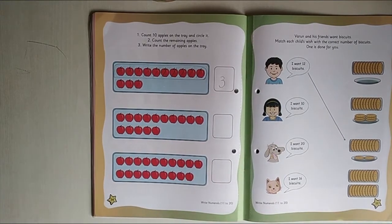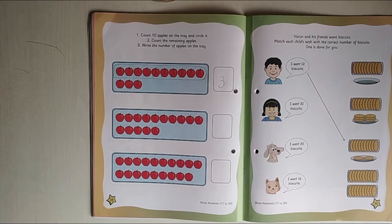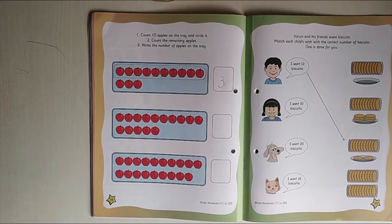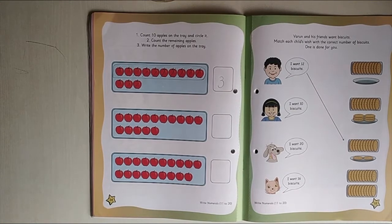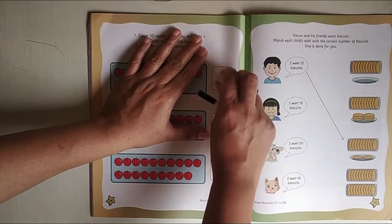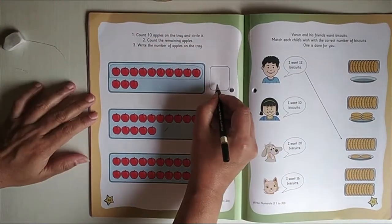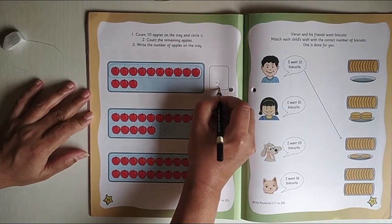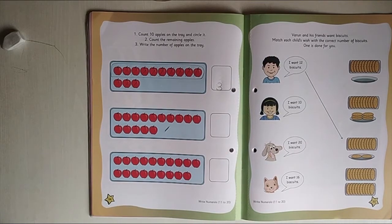Children do you see what did I do? I have done something wrong. Can you see? Can you guess? I have written the number 3 in between the boxes. So that's wrong. So I am going to write number 3 on the line. Okay. I am written.